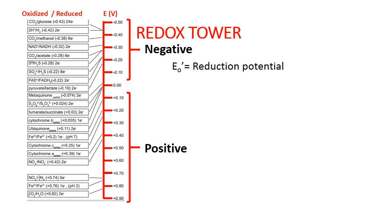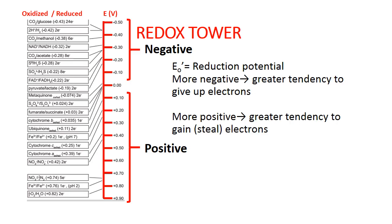This means that the compounds at the bottom of the tower are more likely to gain electrons when you compare one of these compounds to one at the top of the tower. You may also notice a slash on each line of the tower. On the left-hand side of the slash is the oxidized form of the compound. The right-hand side is the reduced form of the compound.